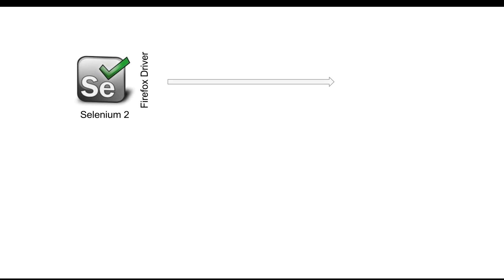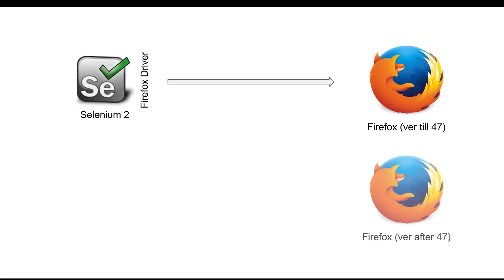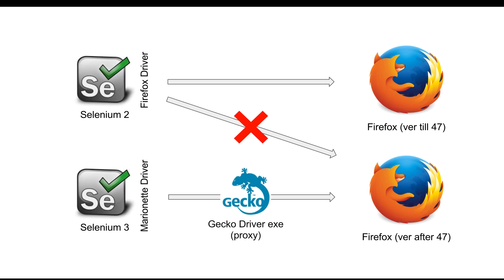Until Selenium 2, we had the Firefox Driver and used it to interact with the Firefox browser. From Firefox version 48 onwards, Firefox made some changes and, due to security reasons, it does not allow any third-party driver to directly interact with the browser. So you cannot use the Firefox Driver from Selenium 2 after Firefox version 47. Therefore, we need Selenium 3, which has the Marionette Driver, and with this you can directly interact with the Firefox browser using a proxy — which is our Gecko Driver.